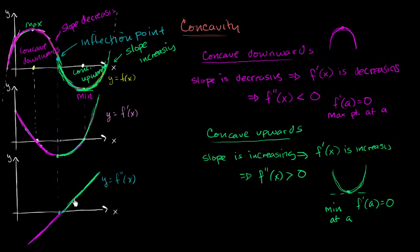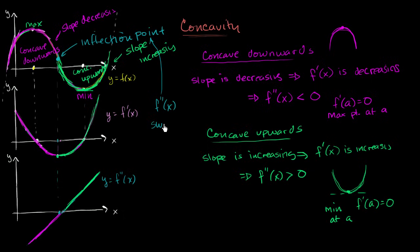In this case, we went from negative to positive, but we could have also switched from being positive to negative. So at an inflection point, your second derivative f''(x) switches signs — goes from being positive to negative, or negative to positive.